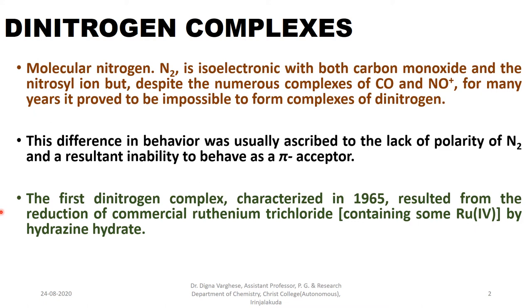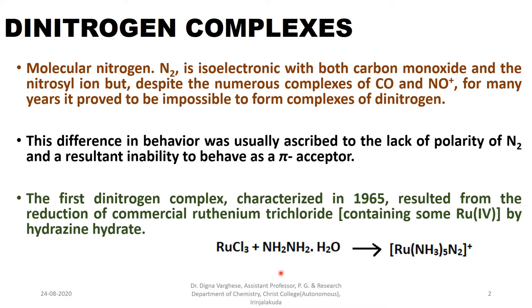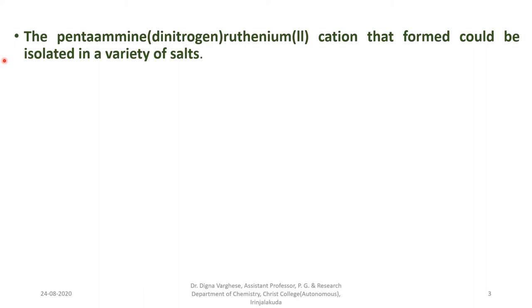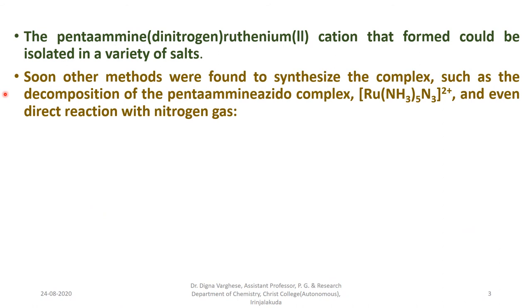In carbon monoxide and nitrosyl ion, the compounds are made up of hetero atoms with some electronegativity difference, making them polar. But in nitrogen, the same atoms mean the same electronegativity, so it is a non-polar molecule and normally inert. This lack of polarity resulted in inability to behave as a pi acceptor. The first dinitrogen complex, characterized in 1965, resulted from the reduction of ruthenium trichloride by hydrazine hydrate, forming [Ru(NH3)5N2]2+, the pentamine dinitrogen ruthenium(2+) cation, isolated in a variety of salts.